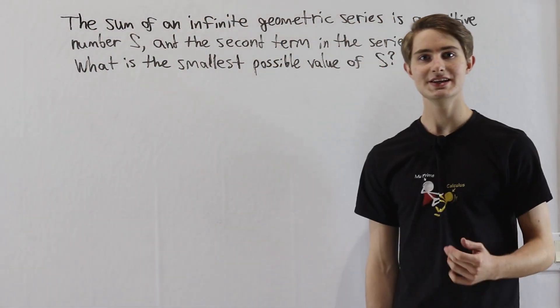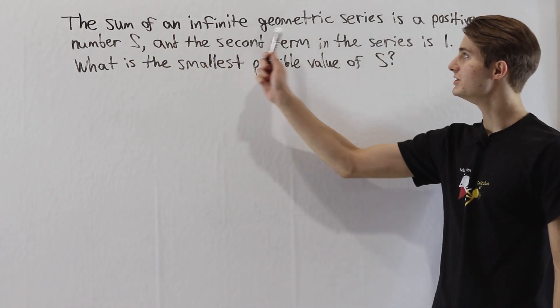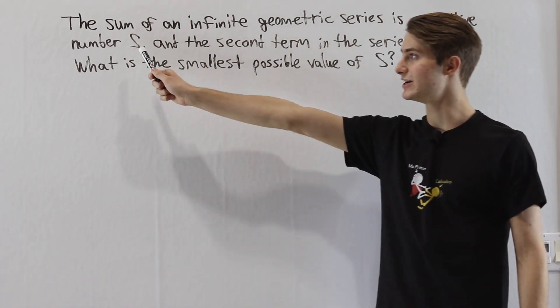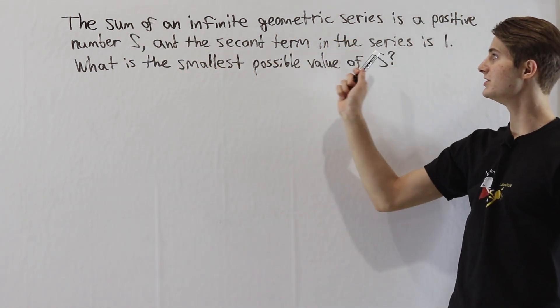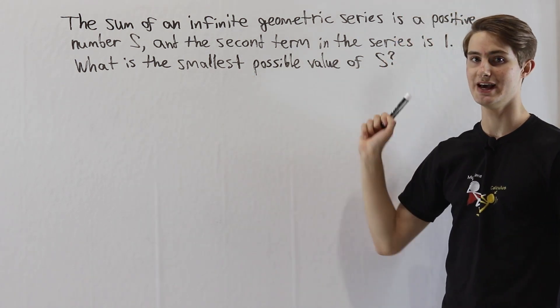We are going to do the 2016 AMC 12B problem 14. The sum of an infinite geometric series is a positive number s, and the second term in the series is 1. What is the smallest possible value of s?